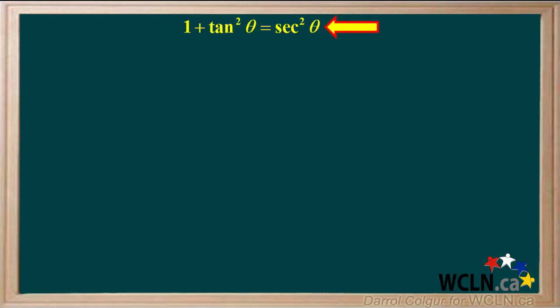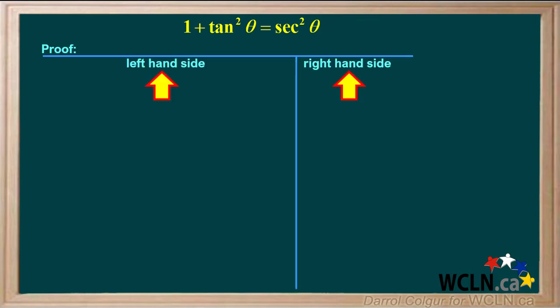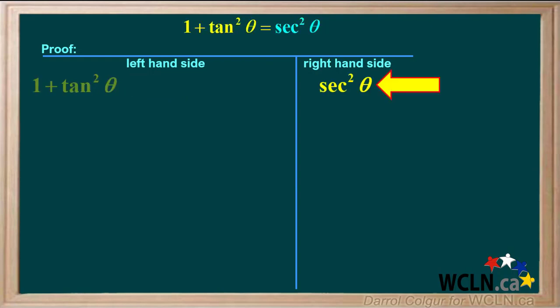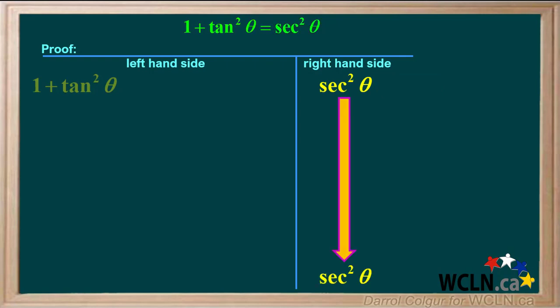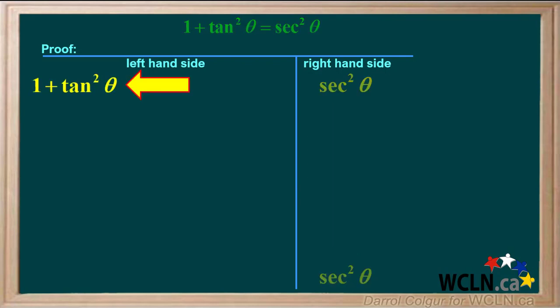We'll start with the identity 1 plus tan squared theta equals secant squared theta. Here's a table we can use. The expression on the left side is 1 plus tan squared theta, and the expression on the right side is secant squared theta. We'll rewrite secant squared theta on the bottom of the right-hand side. Now we'll work through the expression on the left: 1 plus tan squared theta.